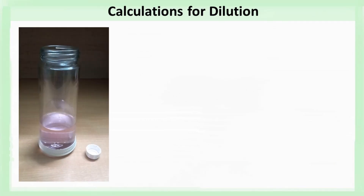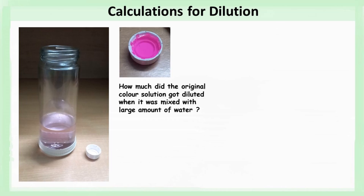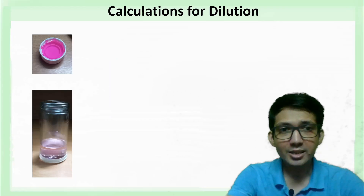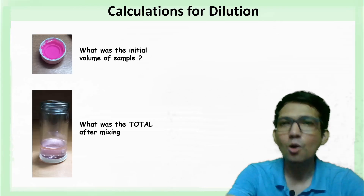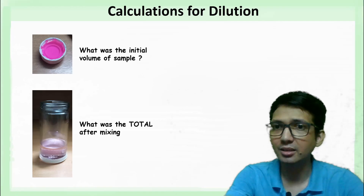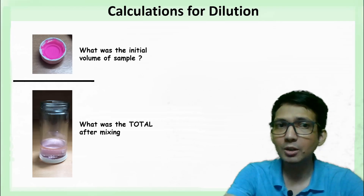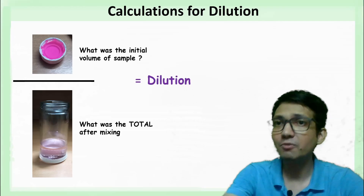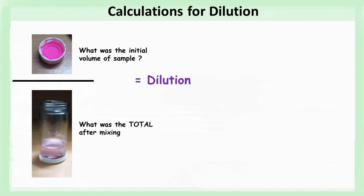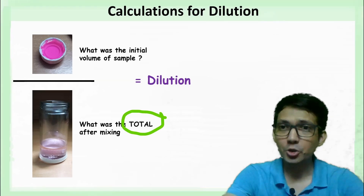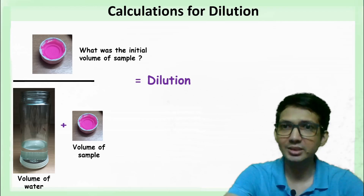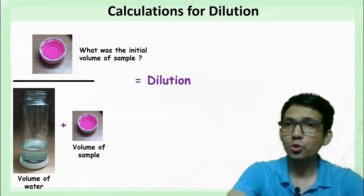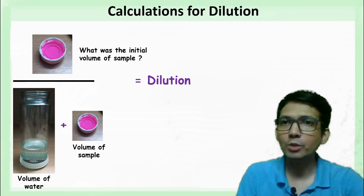The question is: how much is the dilution? How much did the original color solution get diluted when mixed with a large amount of water? To calculate dilution, we need to know the original sample volume and the total volume after mixing. The ratio of sample volume to total volume gives us the dilution. The total volume is the sum of the volume of water and the volume of sample taken.